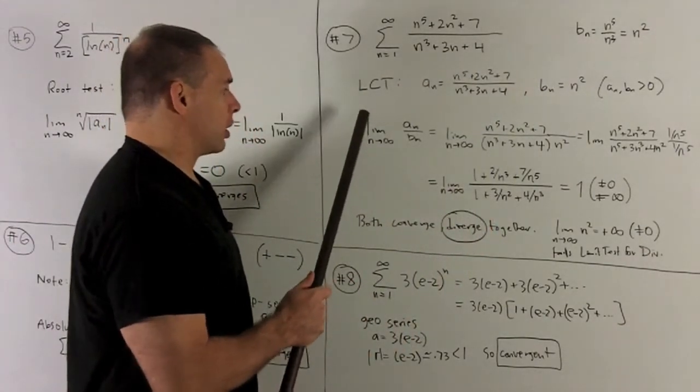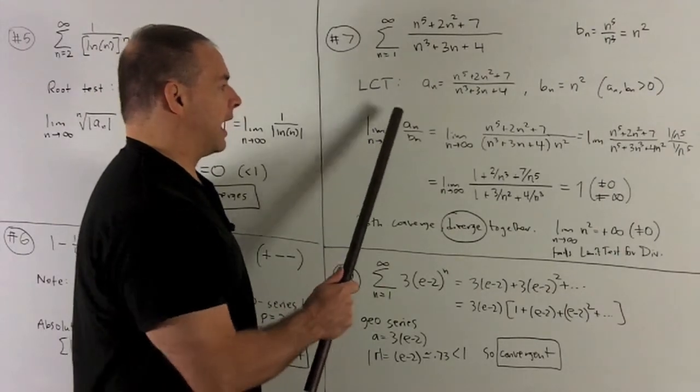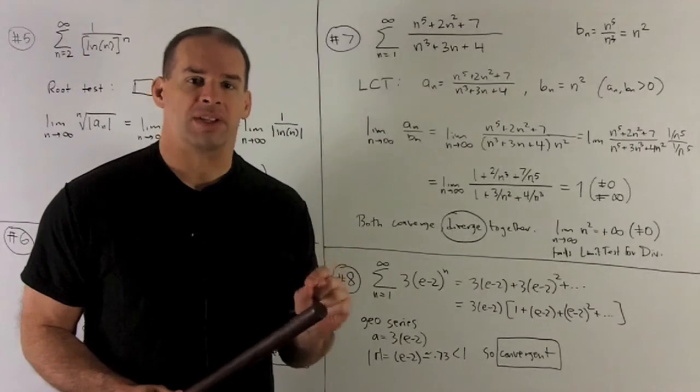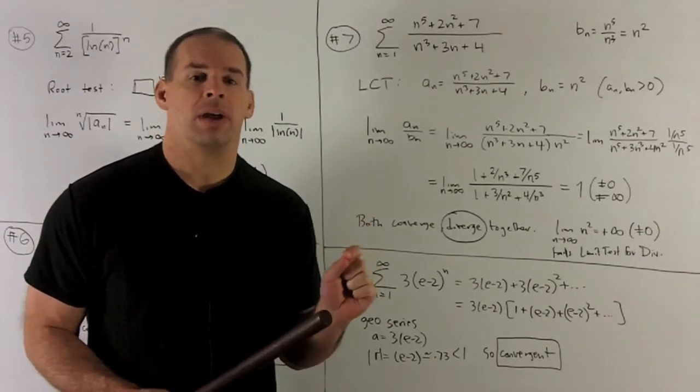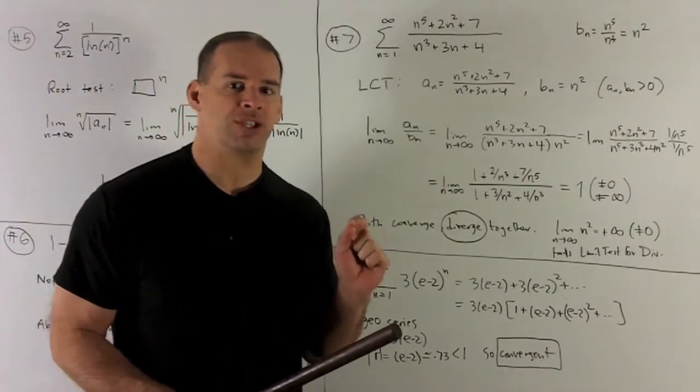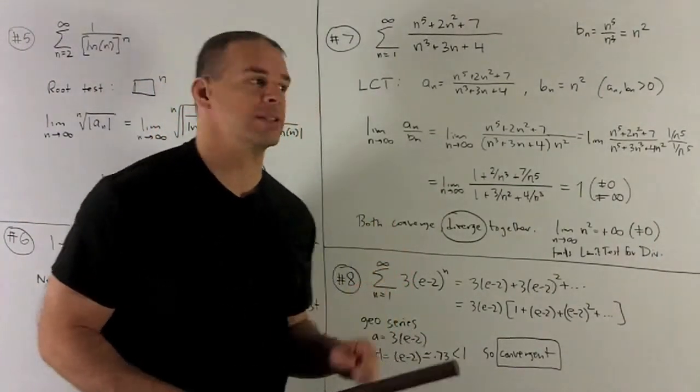So we're going to take our limit n going to infinity of an over bn. What we want here is, we get a limit that's a number that's non-zero and not infinite, then these series are either going to both converge or both diverge together. So let's see what happens.